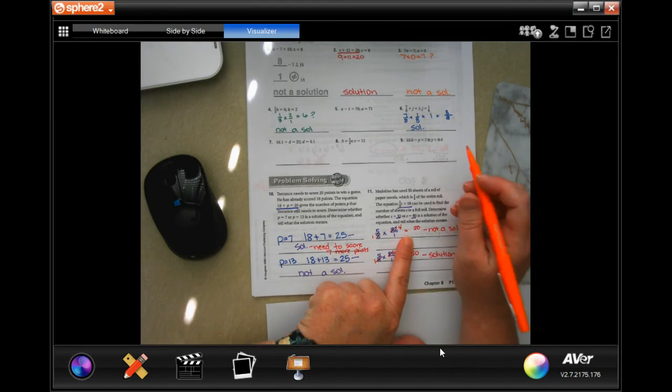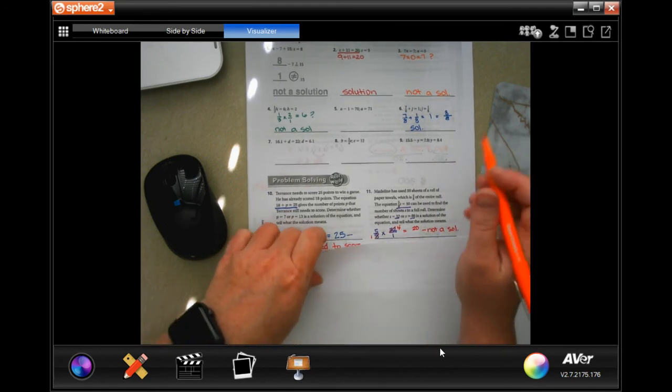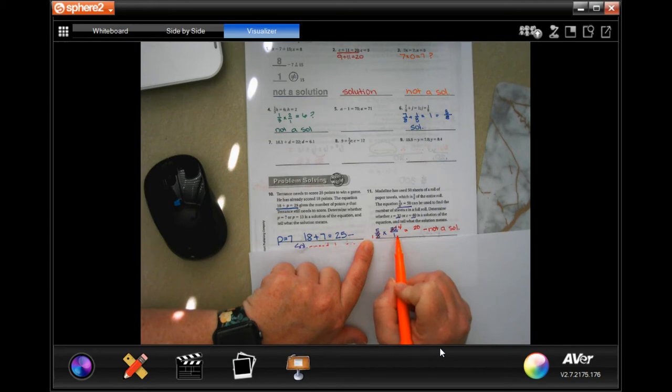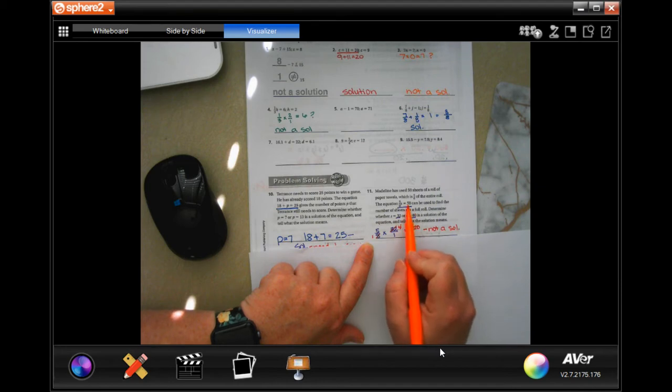So what I did here, for the first one, I filled in 32 for the first one. I did 32 over 1 because I needed it to be a fraction. So then I went ahead and I cross-cancelled. Well, 8 goes into 8 once and 8 goes into 32 four times. So then when I multiply straight across, I get 20. Well, that's not 50. So that's not a solution.